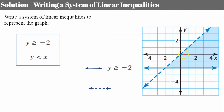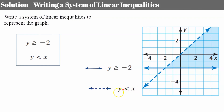I can't check (0, 0) because that's on the boundary, so I'm going to check (2, 1). When y is one, is one less than two? It is, so my boundary line is y < x. You can also see it's shaded below, and that represents my system of inequalities.